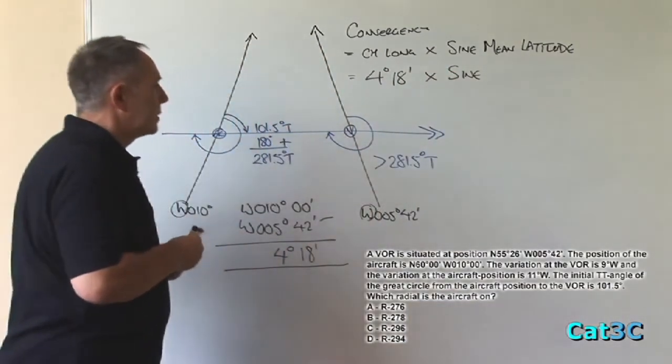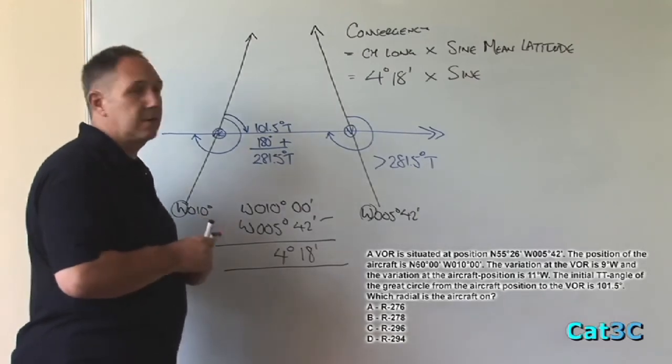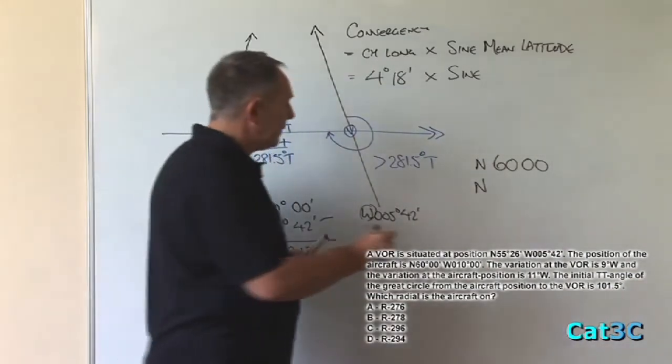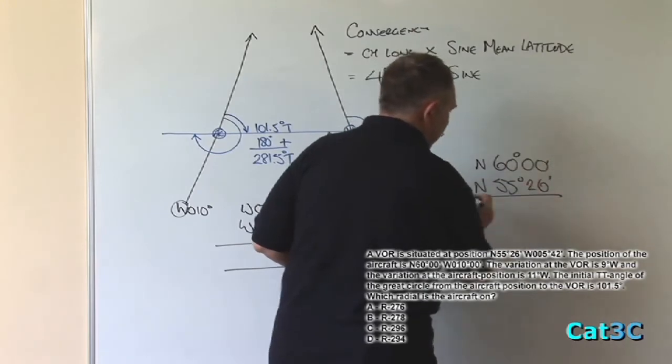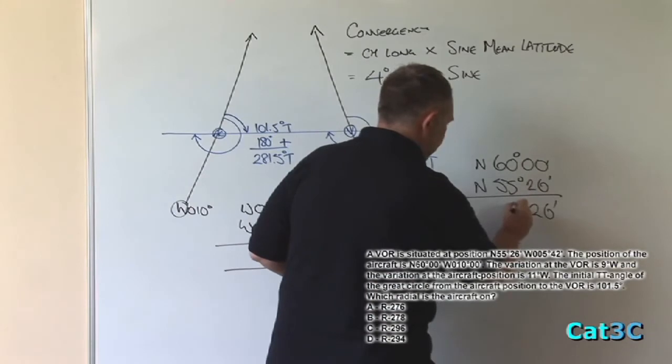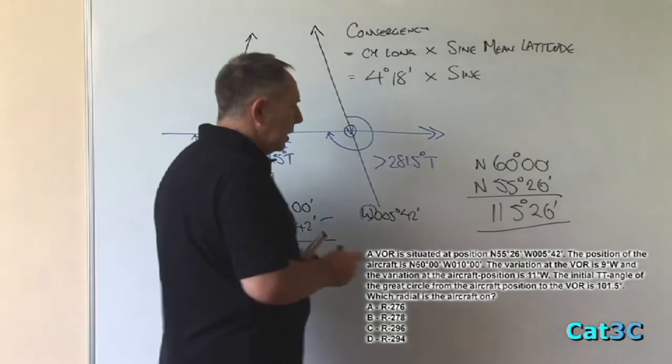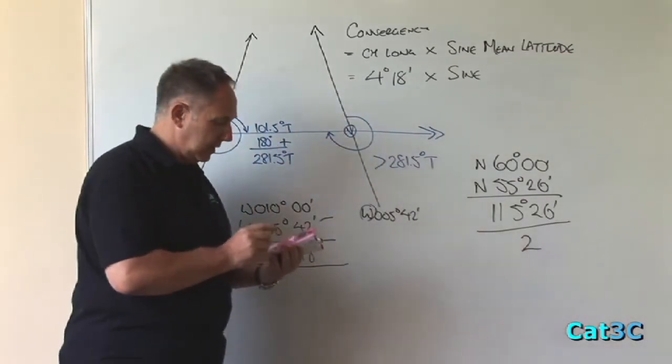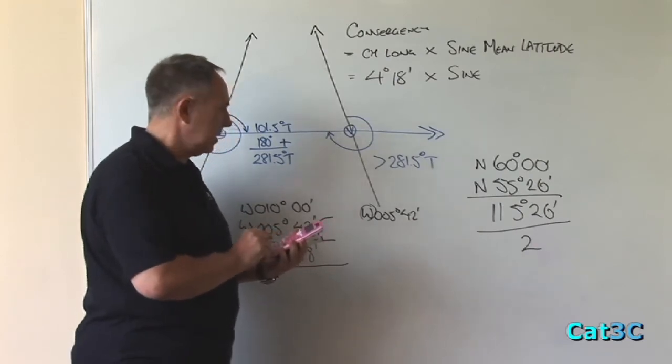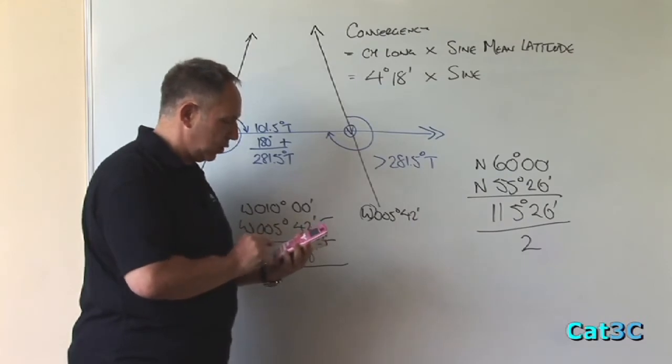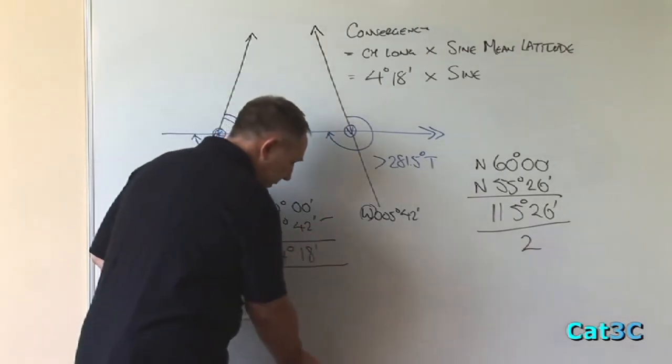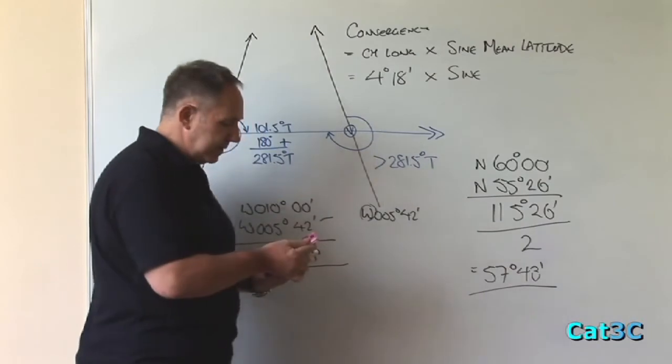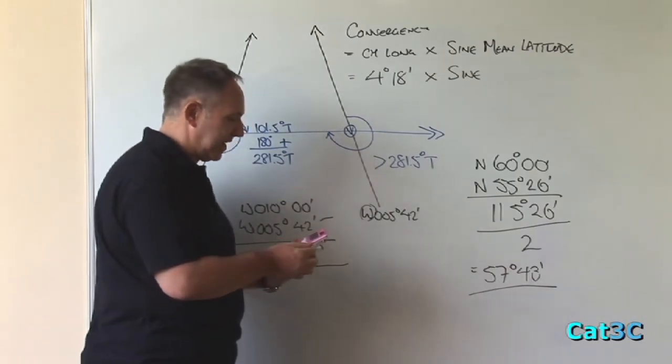We now need to find the mean latitude from which we must find the sine. To find the mean latitude, we take the two latitudes that we know, which are 60 degrees north and the other latitude which is 55 degrees and 26 minutes north. Add these together gives us 115 degrees and 26 minutes. Divide that by two, and I'll do this on the calculator to show how it can be done. So we place 115 DMS 26 DMS divided by two equals and the answer we get is 57 degrees and 43 minutes. Leaving that number in the calculator, I then simply press the sine button equals and I get a value of 0.845.